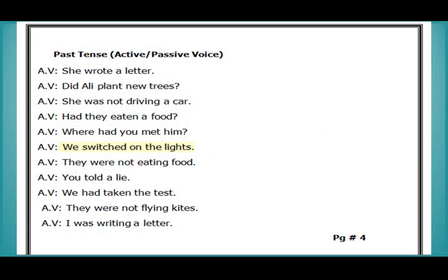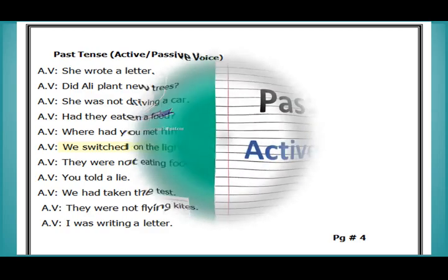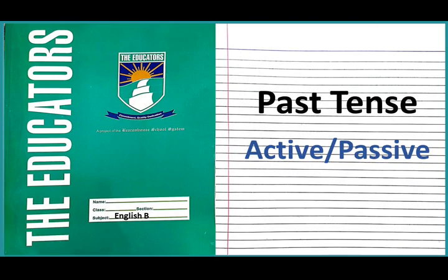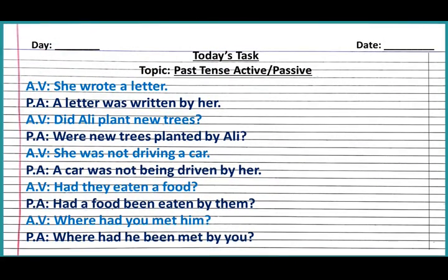Dear students, here you can see an image taken from your winter pack page number 4. As you can see, some sentences are given here and we have to change these sentences into passive voice. So today we will write down these sentences and change them into passive voice in our English notebooks. First of all, you have to make a title page where you write 'Past Tense Active Passive.' Prepare your notebook page: write the day, date, draw a margin line, write today's task, and write the topic — past tense active passive.